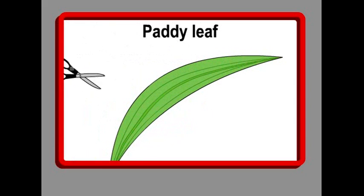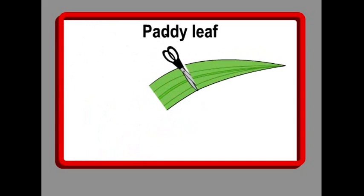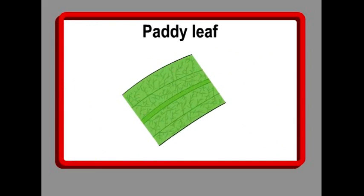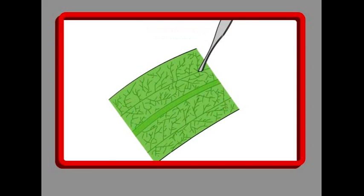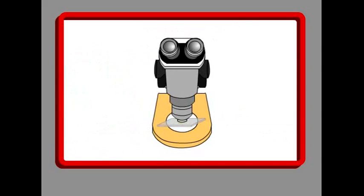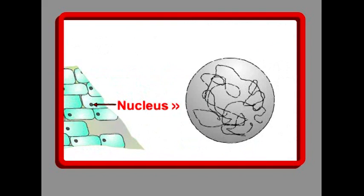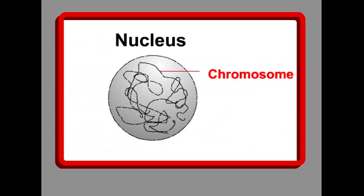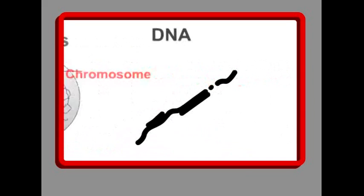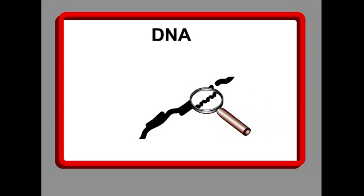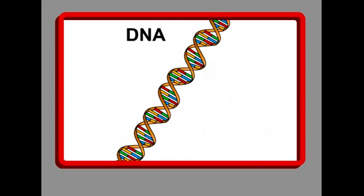All parts of an animal or plant are made up of cells. Let's take a leaf, for example, and look at it through a microscope. Can you see the cells? Each cell has a nucleus — this is the command center of the cell. In the nucleus, there are long string-like things called chromosomes. Each chromosome is made up of deoxyribonucleic acid, or DNA.